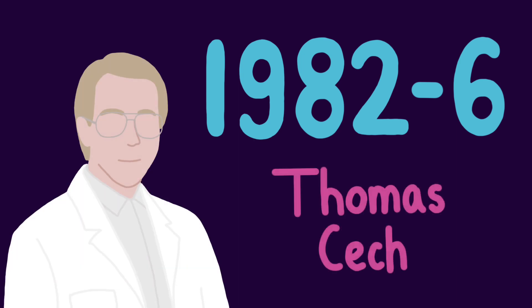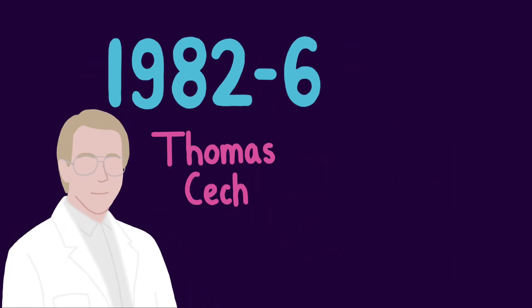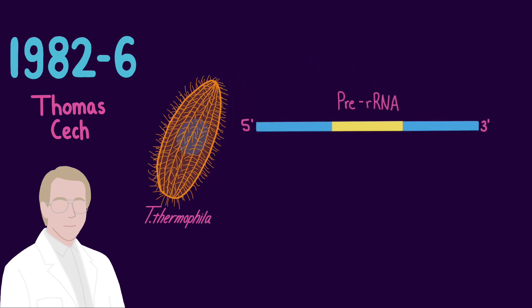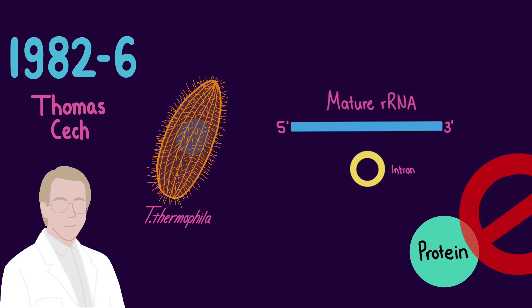However, Gilbert's idea was most influenced by studies by Thomas Cech's group, where it was found that in Tetrahymena thermophila, a species of protozoa, the precursor ribosomal RNA contained an intron that is capable of performing linked cleavage and ligation reactions to splice itself out of the pre-RNA and form a mature RNA molecule without the aid of any proteins.